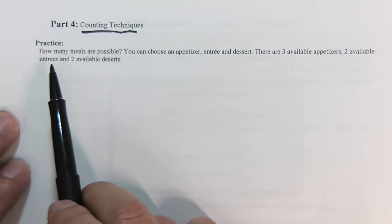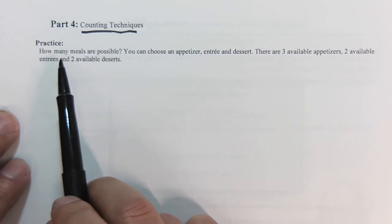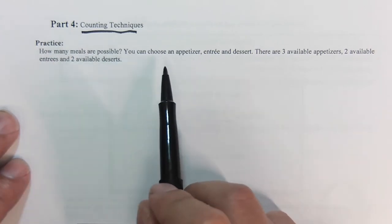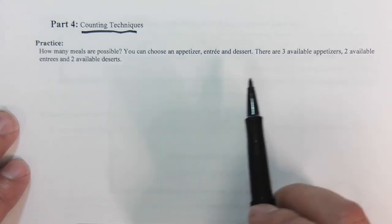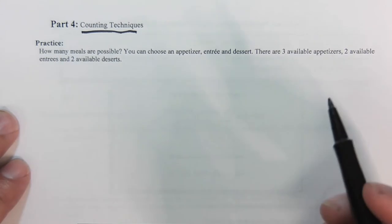I want to start out here with some practice. How many meals are possible? You can choose an appetizer, entree, and dessert. There are three available appetizers, two entrees, and two available desserts.